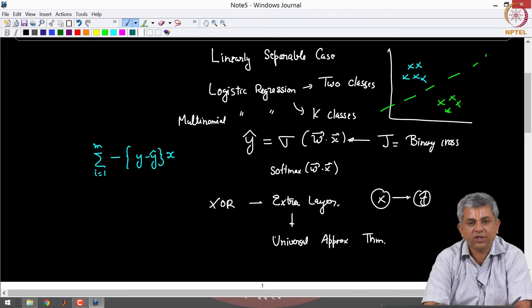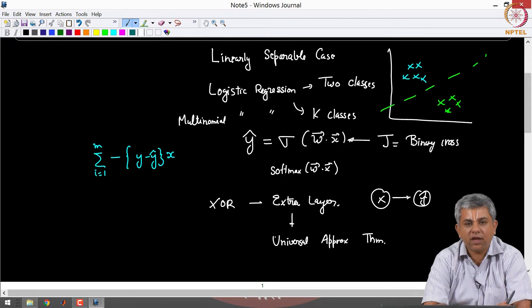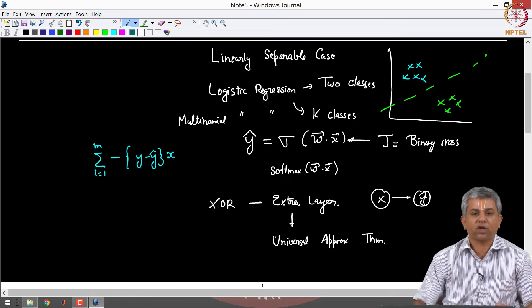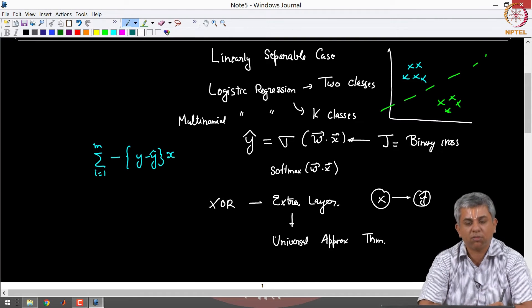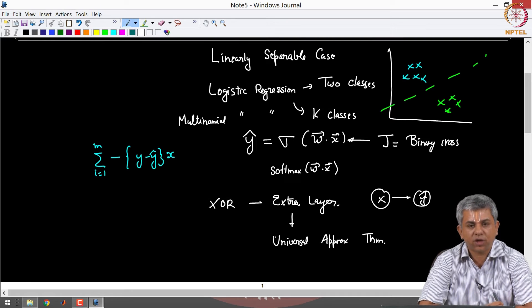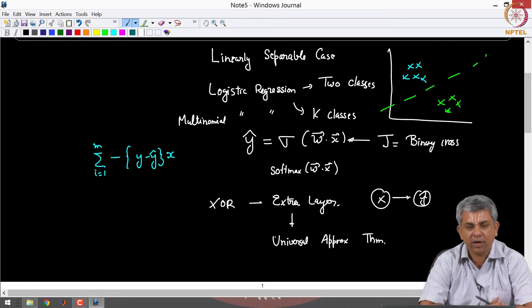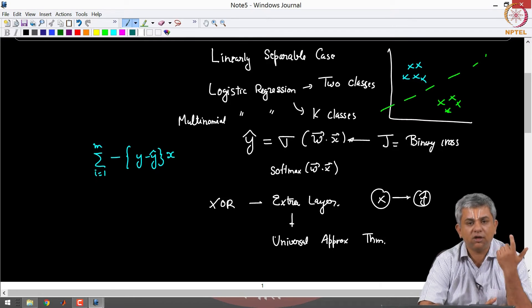However with an extra layer it is possible. It can be proved that you have the universal approximation theorem which says that any function can actually be approximated to an arbitrary degree of accuracy provided you are willing to increase your number of neurons.